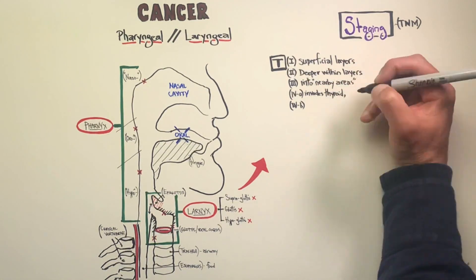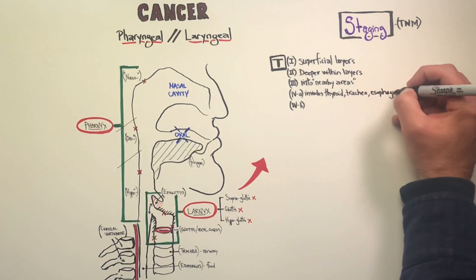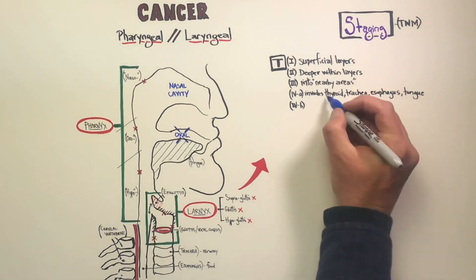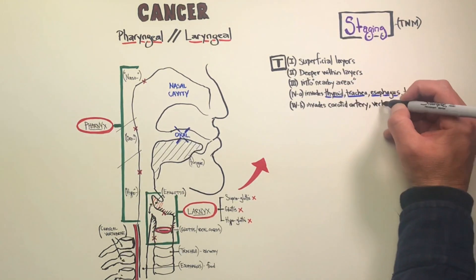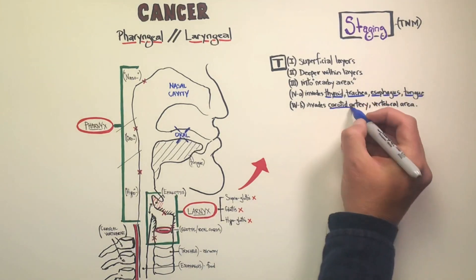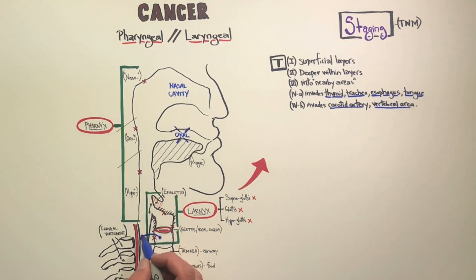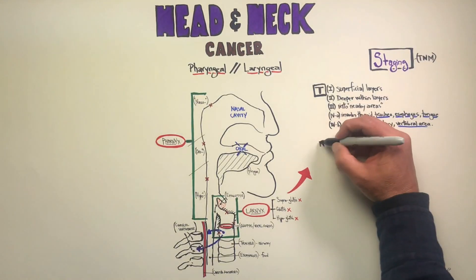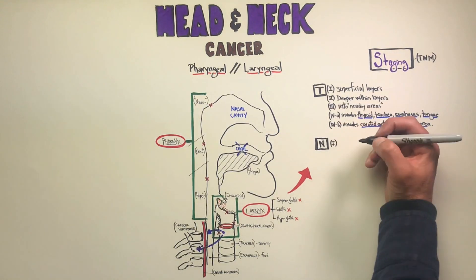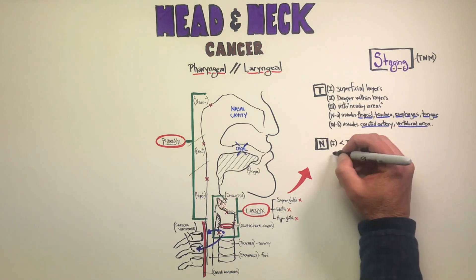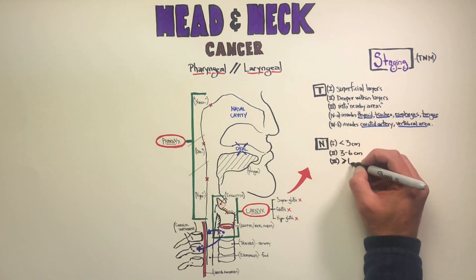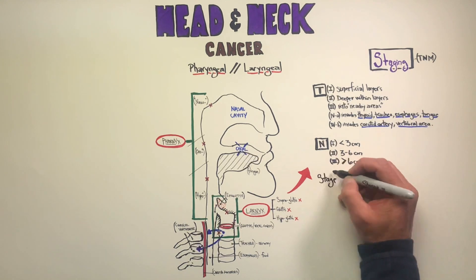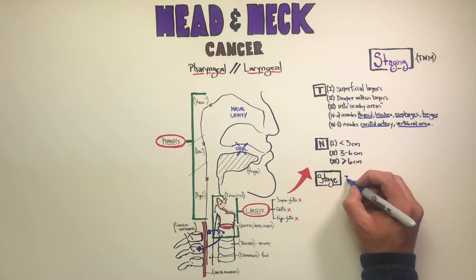T3 can also impact the ability for the vocal cords to work properly. A T4A and B involves structures that are outside of the larynx — the thyroid, cartilage, trachea, esophagus, and tongue. A T4B involves the carotid artery and the vertebral area as well. For the N scoring, an N1 is a lymph node involved smaller than 3 centimeters, N2 between 3 and 6 centimeters, and an N3 above 6 centimeters.